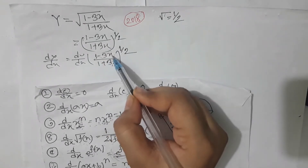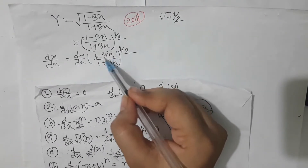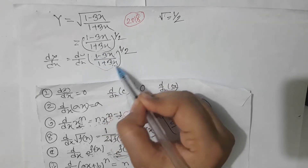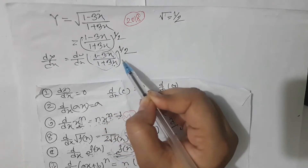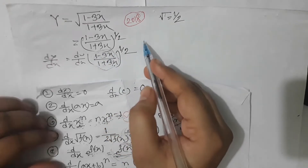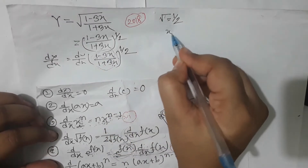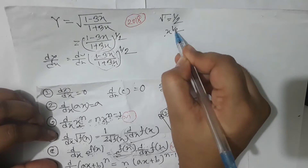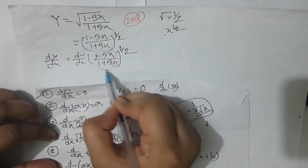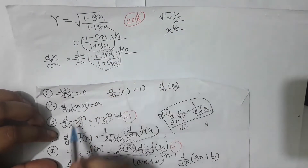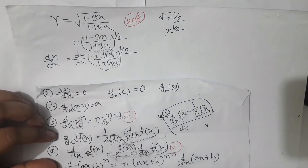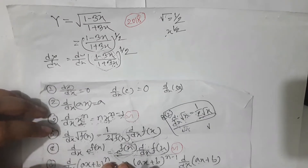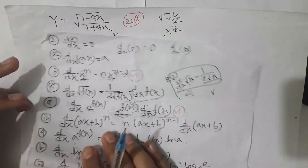So we are working with the expression 1 − 3x throughout this step, applying it repeatedly as the numerator component in our differentiation.